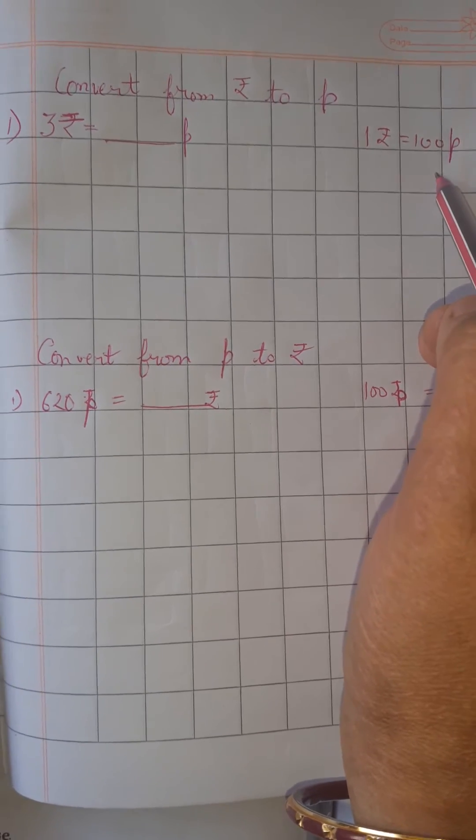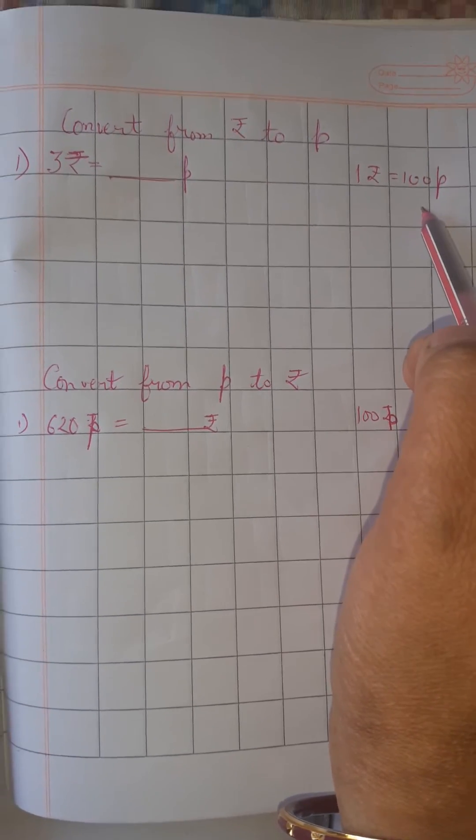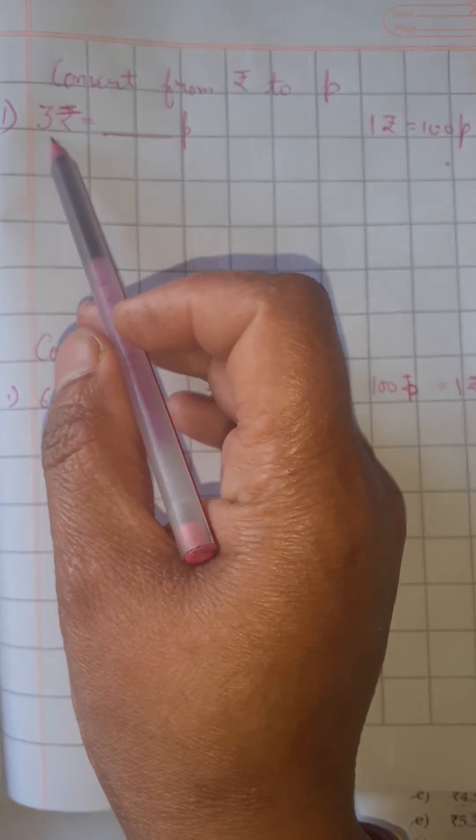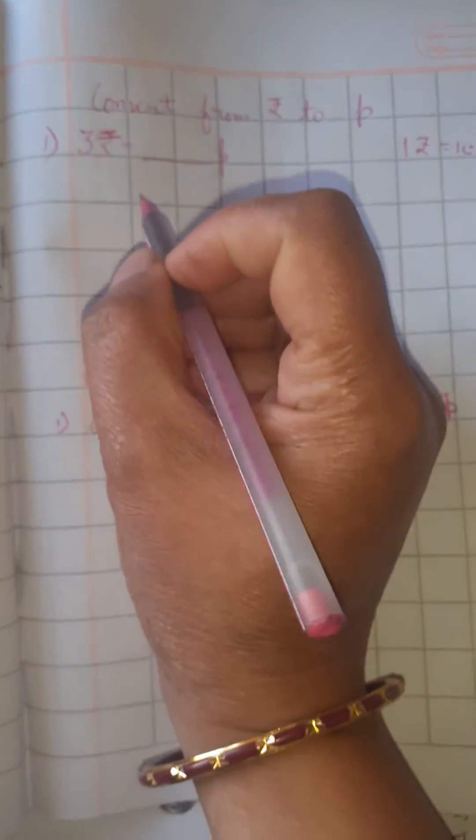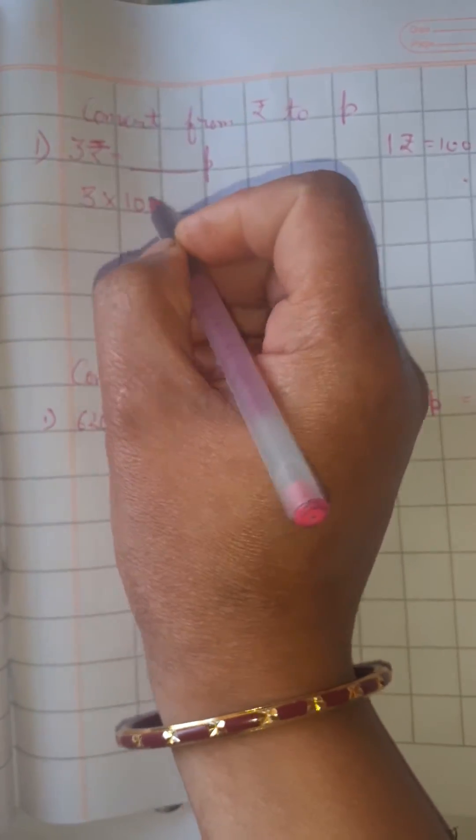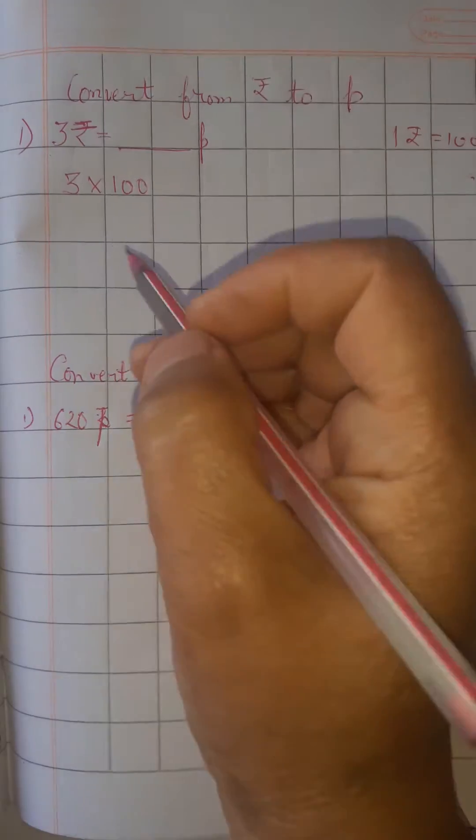1 rupee is equal to 100 paisa. In this 3 rupees, you have to find out how many paisas are there. So what you will do: 3 multiplied by 100, so you will get 300 paisa.